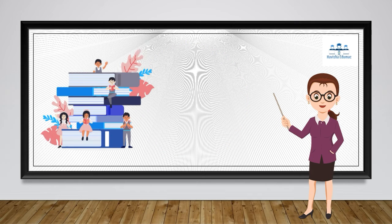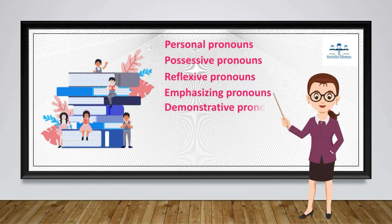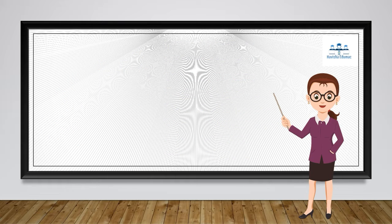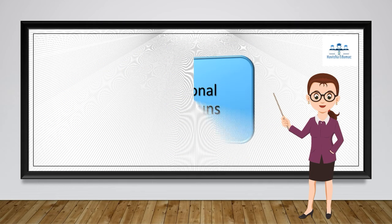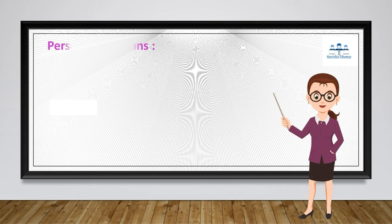Now let us see the types of pronouns: personal pronouns, possessive pronouns, reflexive pronouns, emphasizing pronouns, demonstrative pronouns, interrogative pronouns, relative pronouns, and indefinite pronouns. There are a total of eight types of pronouns. Let us see them one by one.